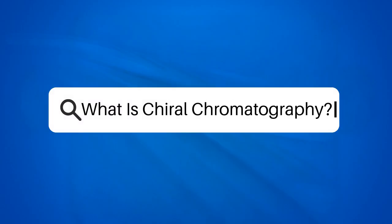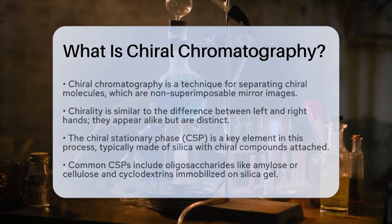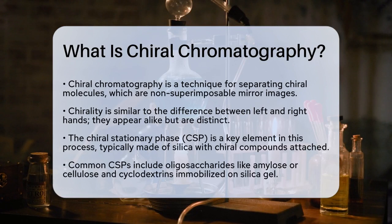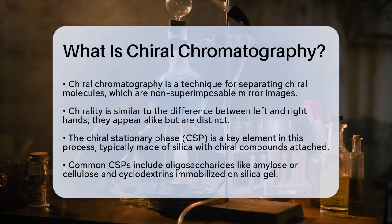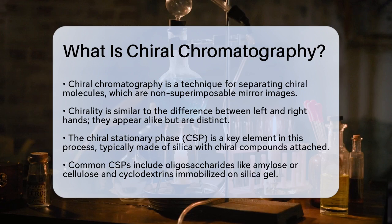What is chiral chromatography? If you're curious about how scientists separate molecules that are mirror images of each other but not identical, you're about to learn something fascinating. Let's explore the world of chiral chromatography. Chiral chromatography is a specialized technique used to separate chiral molecules, which are molecules that cannot be superimposed onto their mirror images. This property is known as chirality, and it's like the difference between your left and right hand — they look similar but are not the same.